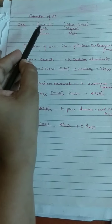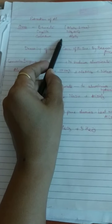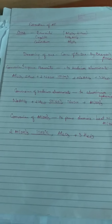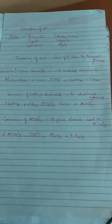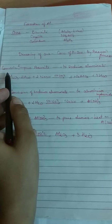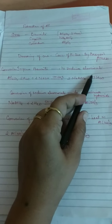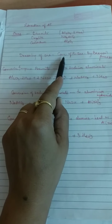The third ore is corundum, with chemical name aluminium oxide and formula Al2O3. Now let us move towards the first step of extraction of aluminium using Bayer's process. The first point is conversion of impure bauxite to sodium aluminate, which is called dressing of the ore.